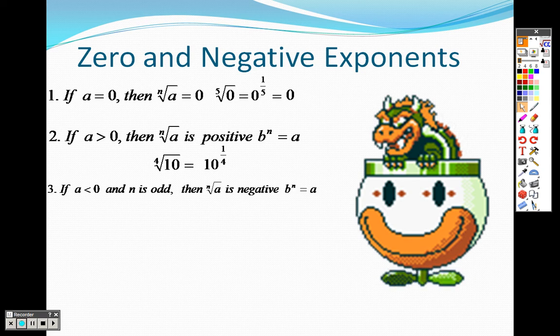If a is less than zero and n is odd, then the nth root of a is negative. So the third root of negative 8 you'd write as negative 8 to the one-third power.